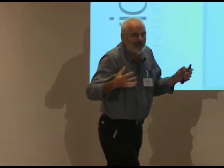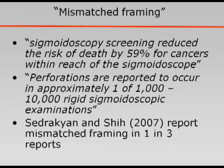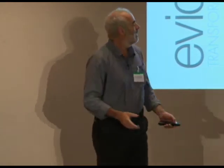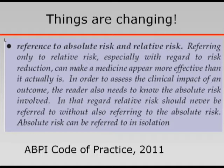We all know about the issues of relative and absolute risk and how these are used to spin messages. A classic problem is mismatched framing, where the benefits of a treatment are expressed as a relative risk — a 59% reduction in cancers from screening — while the harms are expressed as an absolute risk — a one in 10,000 chance of a perforation. This is called mismatched framing; it's an absolute disgrace and very common. But things are changing: the Association of the British Pharmaceutical Industry's new code of practice has banned this. You must not use relative risks on their own; you must give absolute risks for treatment. A very important innovation.